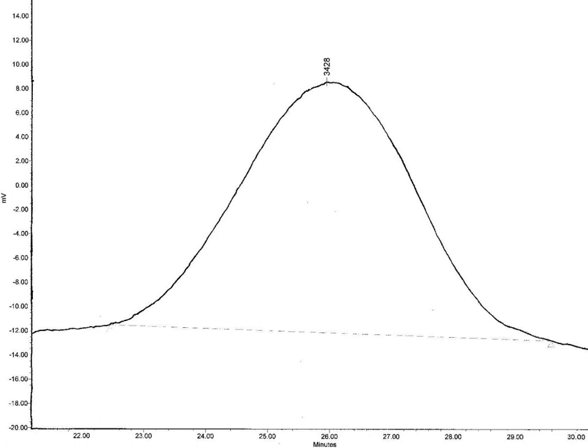Gel permeation chromatography is a type of size exclusion chromatography that separates analytes on the basis of size. The technique is often used for the analysis of polymers. As a technique, SEC was first developed in 1955 by Lathe and Ruthven.